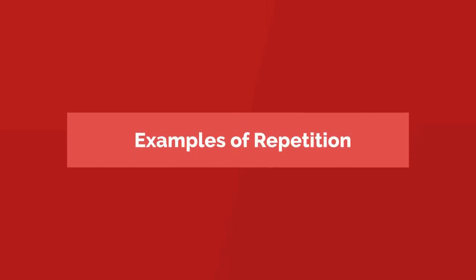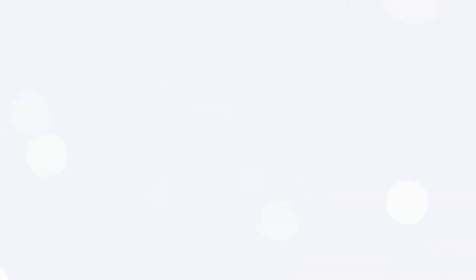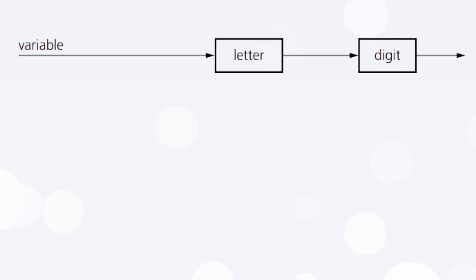Examples of repetition in syntax diagram. According to our first syntax diagram, a variable name must start with a letter and followed by a digit. So in this way,